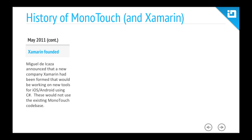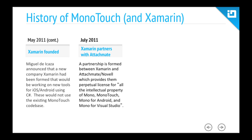Miguel de Icaza announced that they had formed a new company called Xamarin, again partnering with Nat Friedman. They would be working on new tools, but couldn't use the existing MonoTouch code base since Novell still had the rights. Then in July 2011, Xamarin partnered with Attachmate and got a perpetual license for all things Mono, allowing them to immediately start selling the existing MonoTouch and Mono for Android, while building what became Xamarin 2.0.